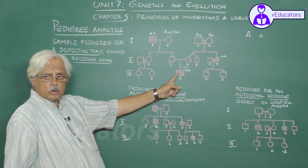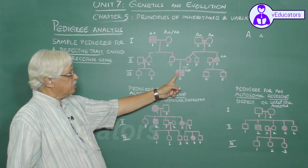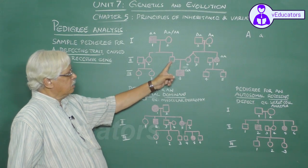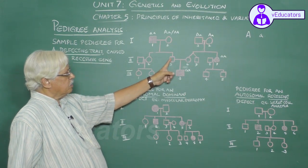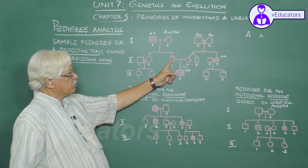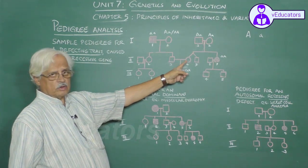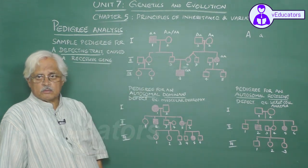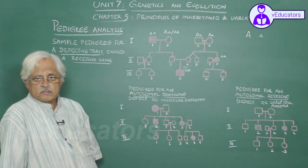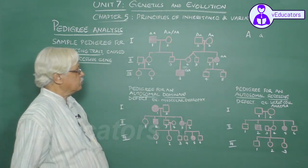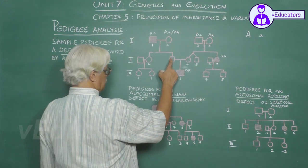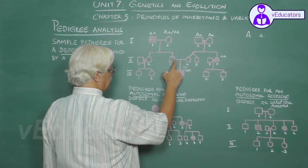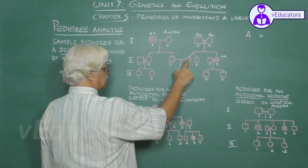This is a heterozygous, and this is a heterozygous. So, capital A is small a, capital A is small a.